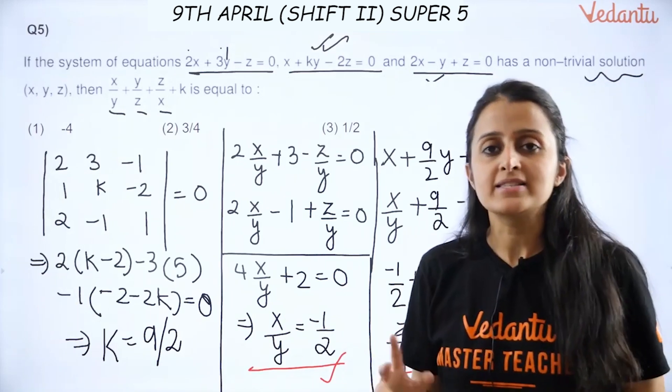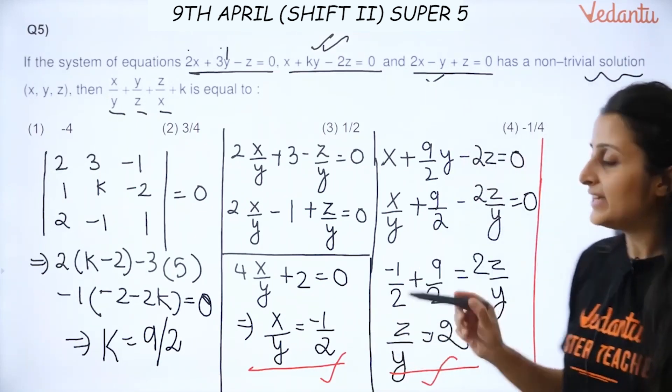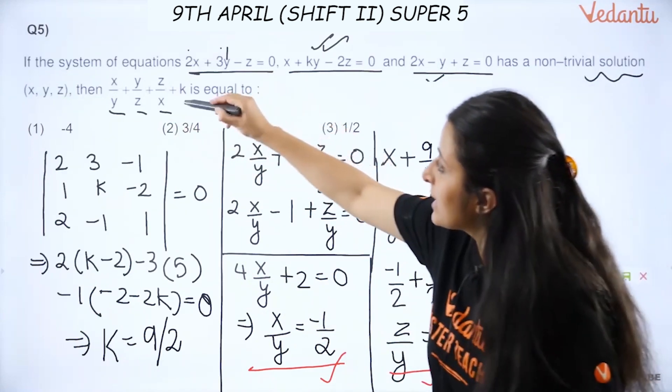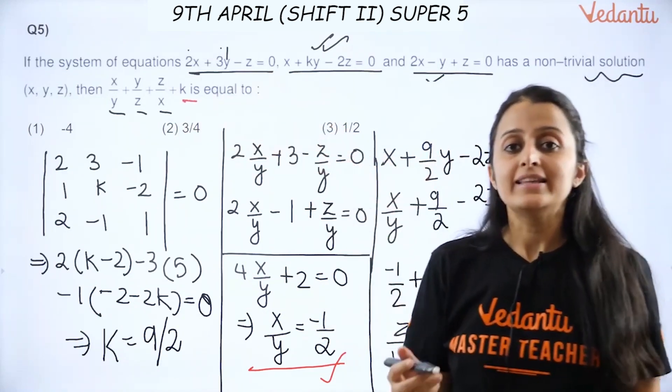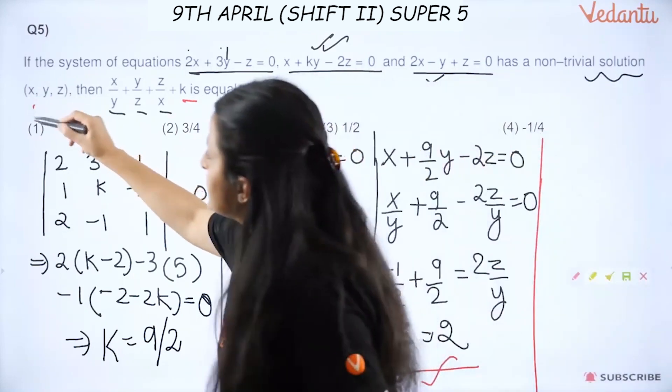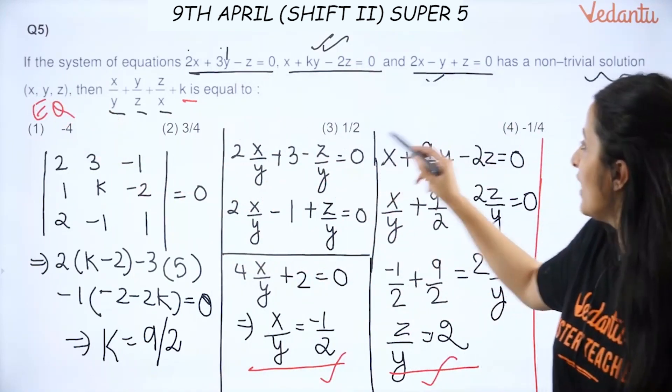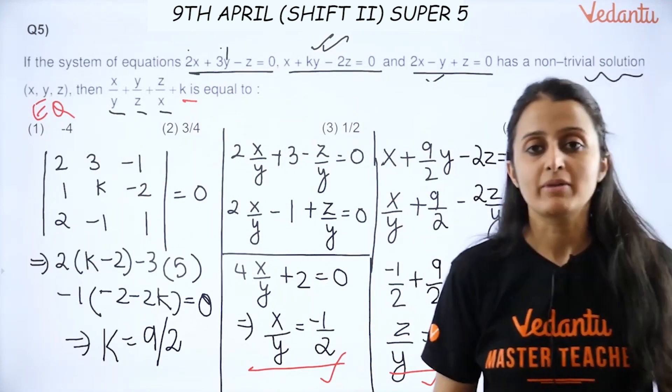Now you can get x/z or z/x by simply dividing them. So find that out, add all the three, and don't forget k is also there, and then tell me what is the answer. Is it equal to minus 4, equal to 3/4, equal to half, or equal to minus 1/4?